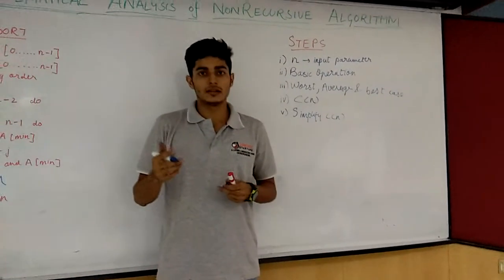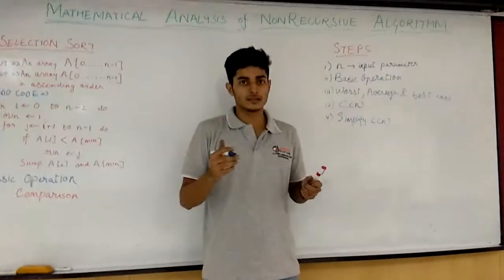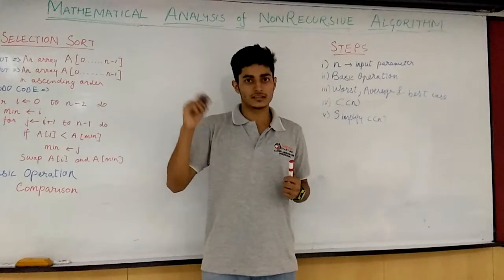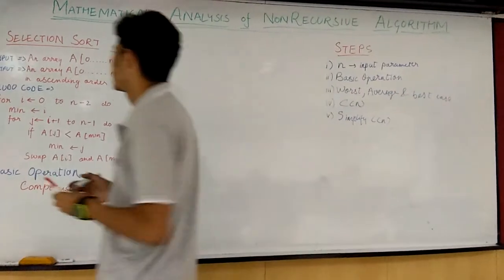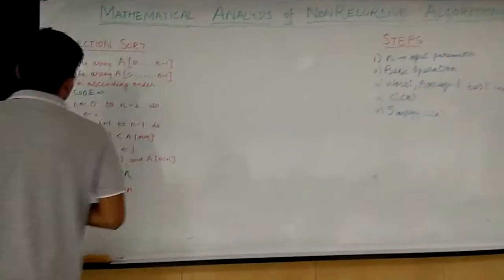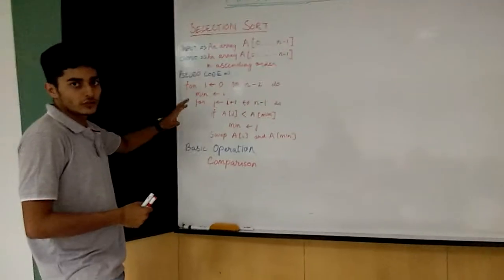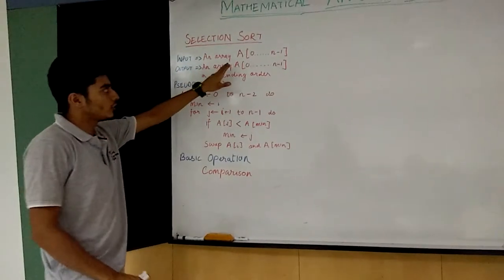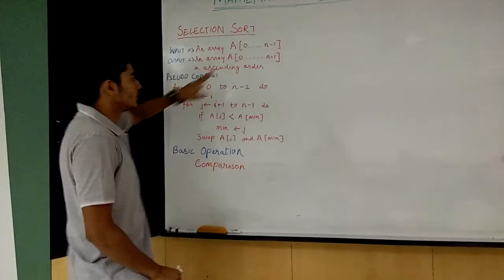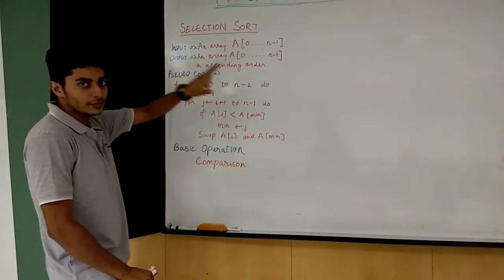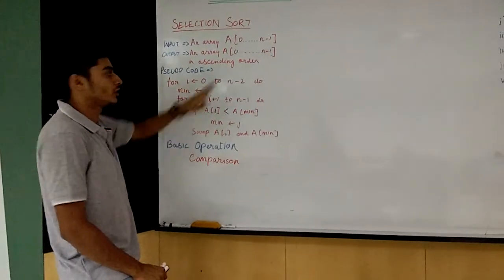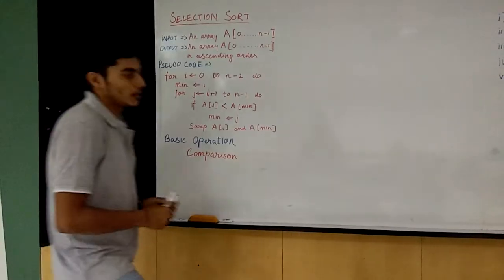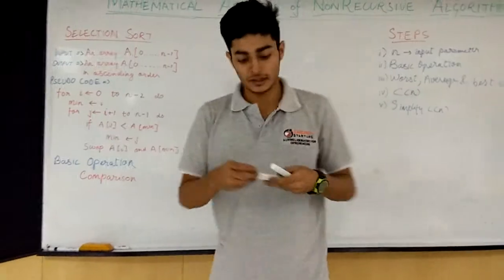We will take an example and discuss the mathematical analysis of selection sort. This is the pseudo code of selection sort. The input is an array of elements from index 0 to n-1. The output is the same array in ascending order.